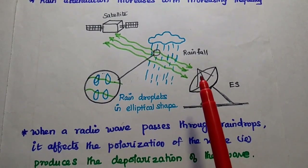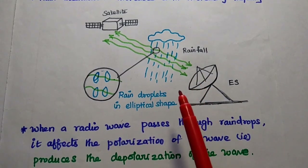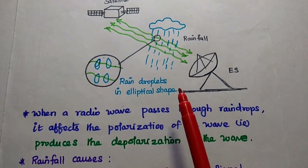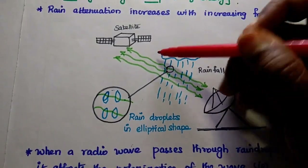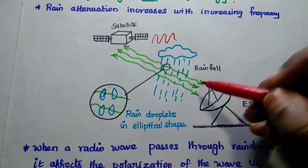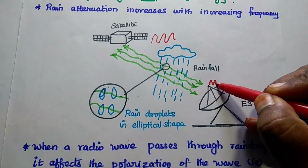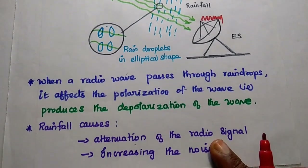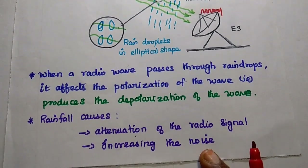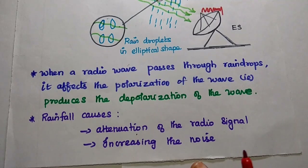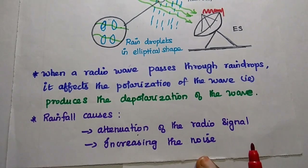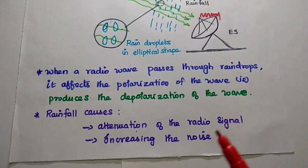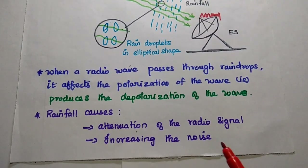This affects the signal polarization, which in turn increases the attenuation range as well as the noise level. Simply put, when we transmit a signal, we receive it with attenuation as well as some added noise. When a radio wave passes through rain drops, it produces a depolarized wave, and rainfall causes both attenuation of the radio signal and an increase in the noise level.